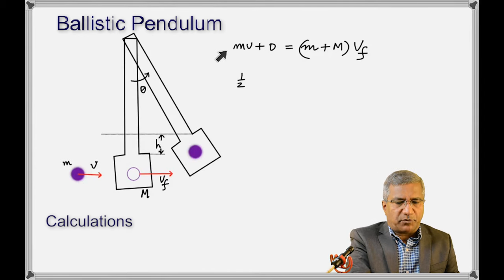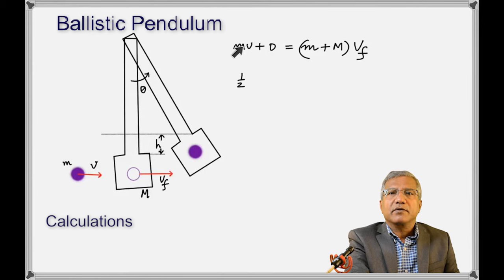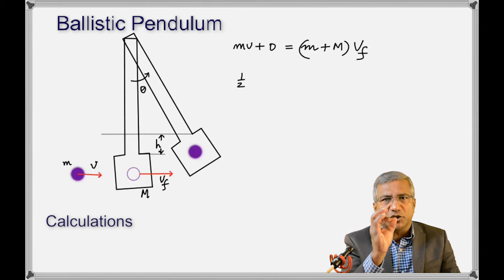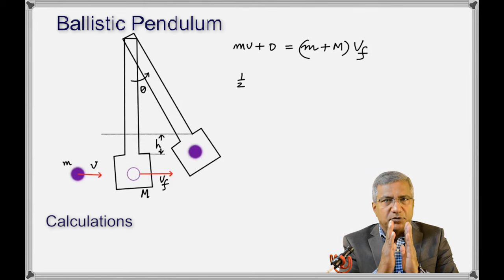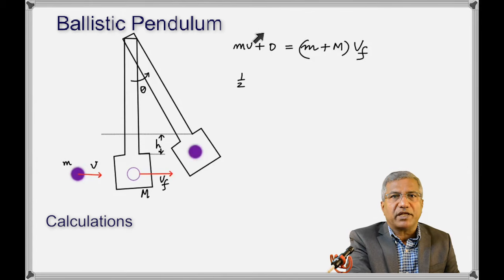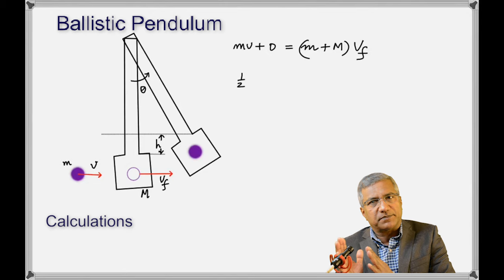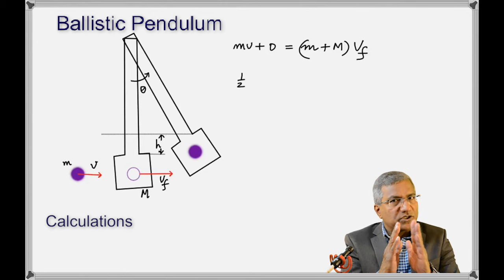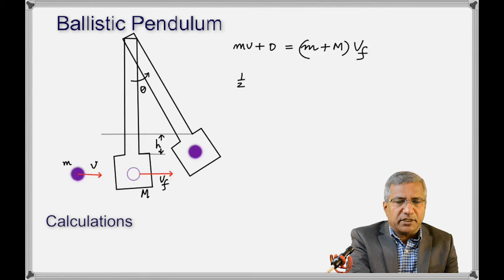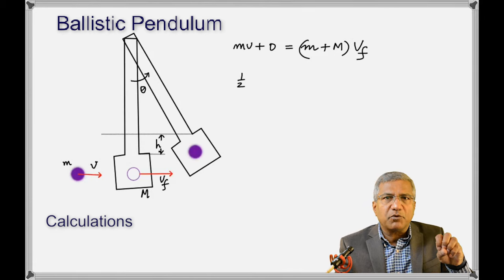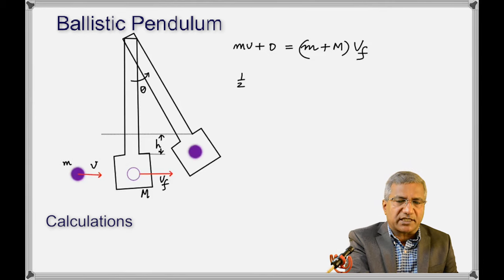Here is the conservation of momentum. The initial momentum of the ball is m times v. The initial momentum of the pendulum is zero because it was at rest. That is the total initial momentum. After the ball gets stuck in the pendulum, the total mass is m plus M and their common velocity is v sub f. According to conservation of momentum, initial momentum equals final momentum: m·v = (m + M)·v_f.